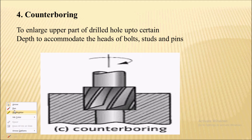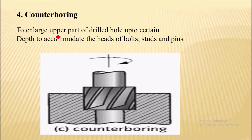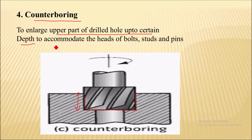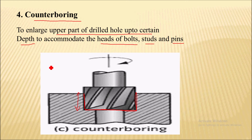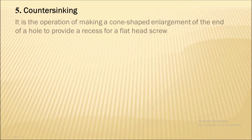The next operation is counter boring. It is again a type of boring operation. In counter boring, it is to enlarge the upper part of the drilled hole up to a certain depth. We have to enlarge the upper part of the hole to a certain depth — that is the counter boring operation. This is done to accommodate the head of a bolt, stud, or pin, so the head of the bolt, pin, or stud can be fitted into this enlarged section.